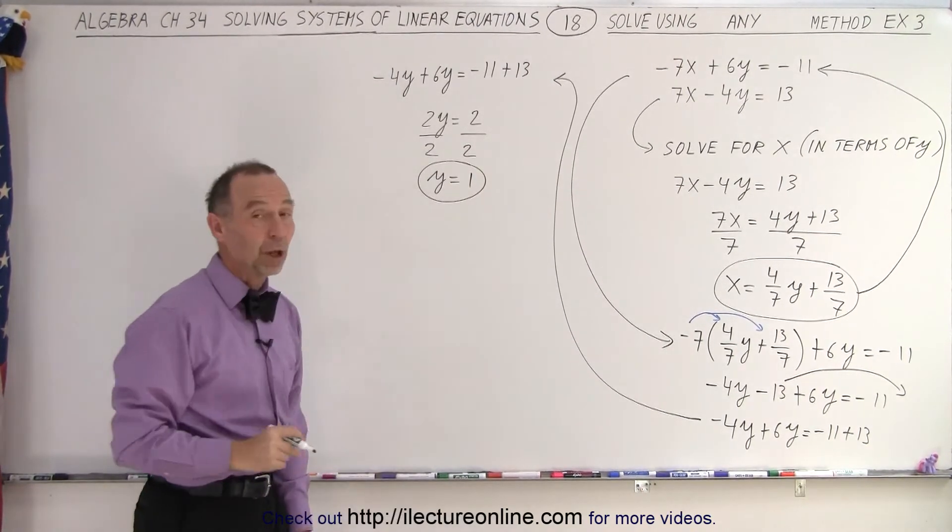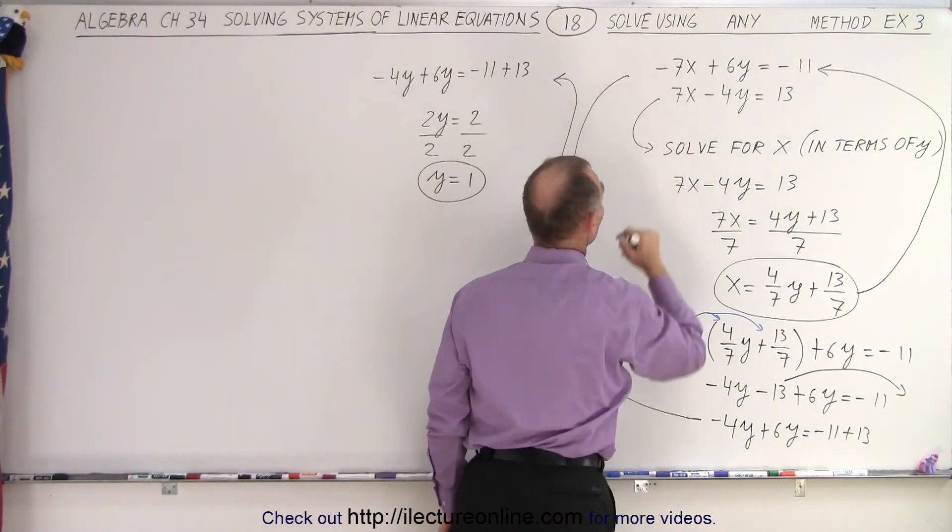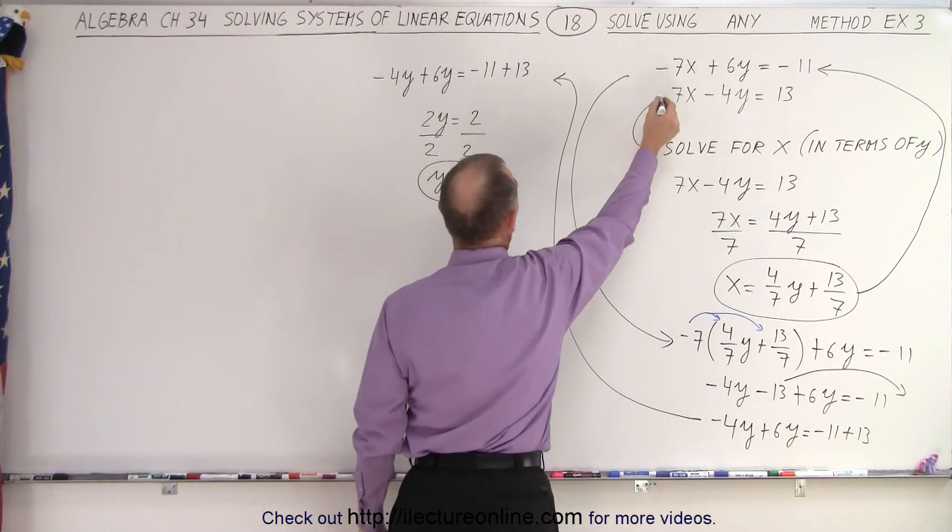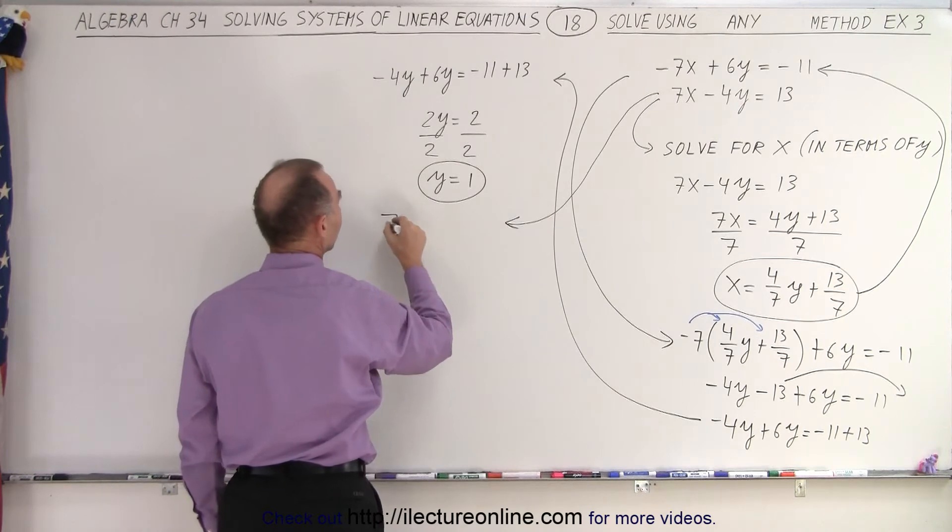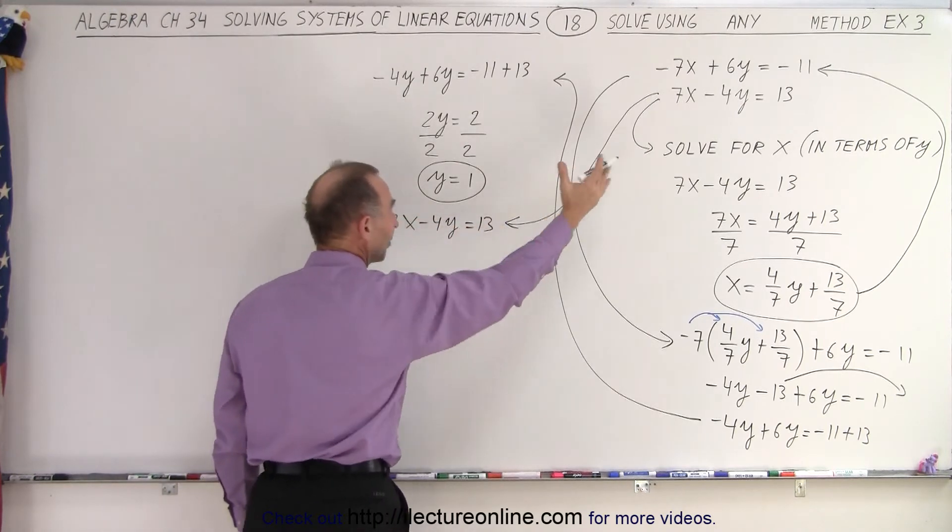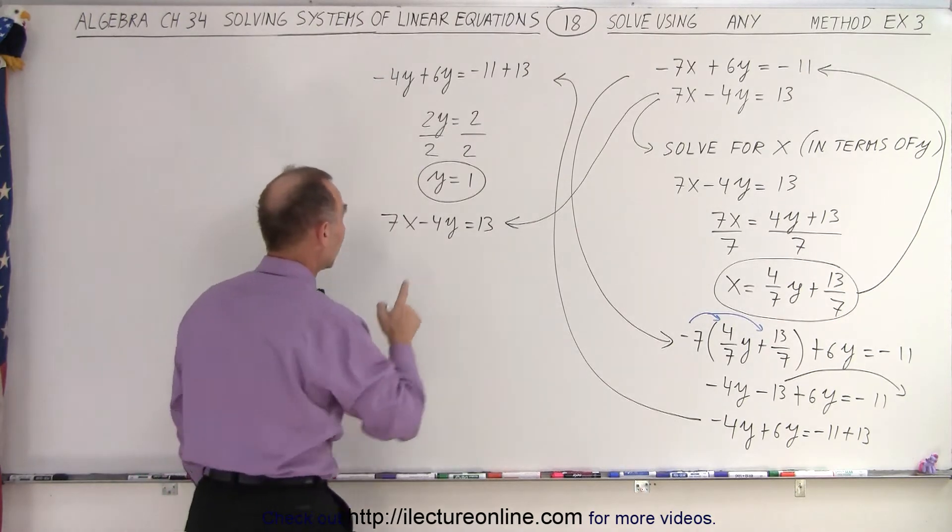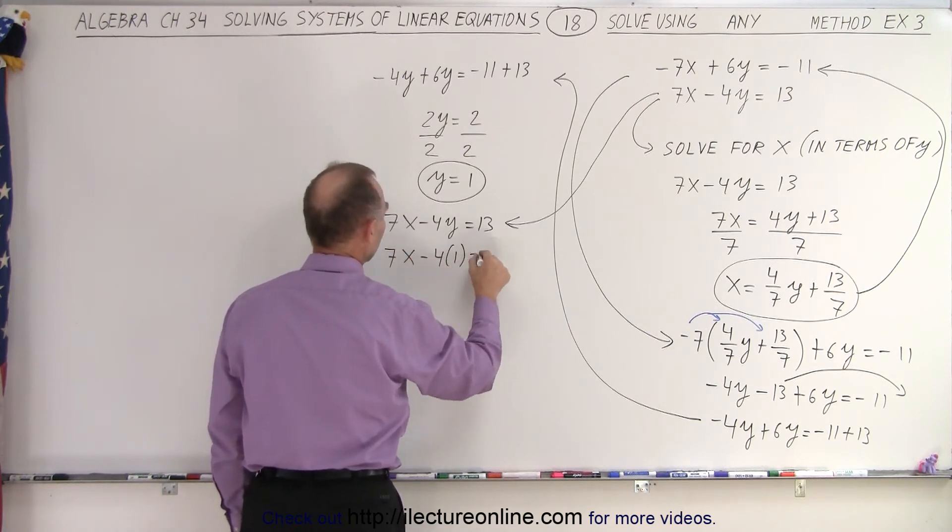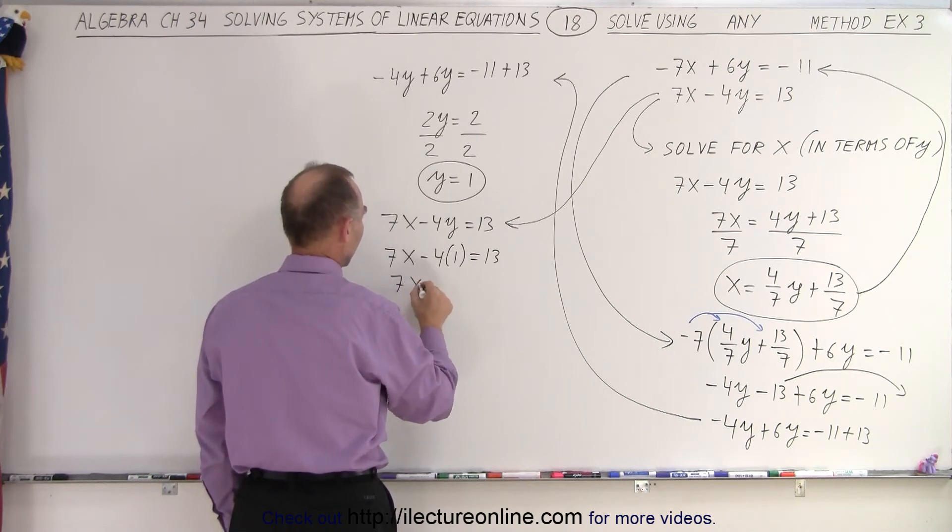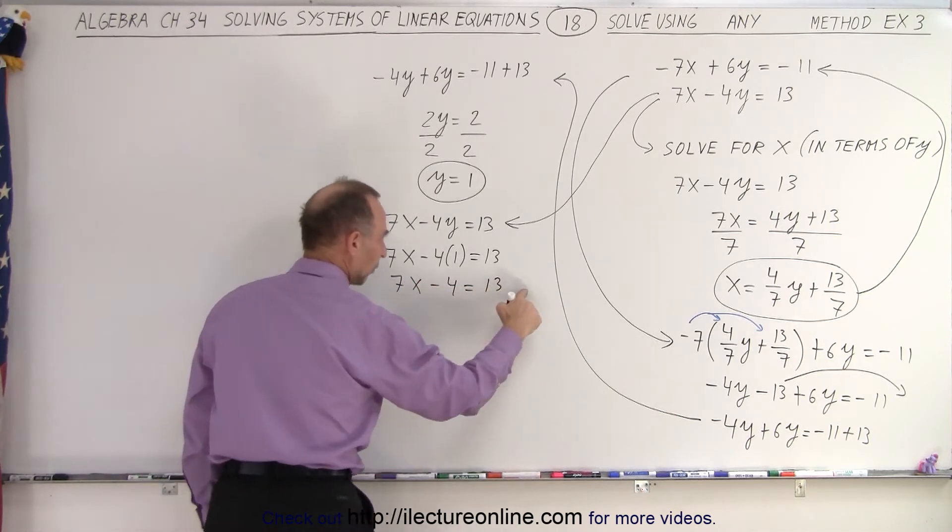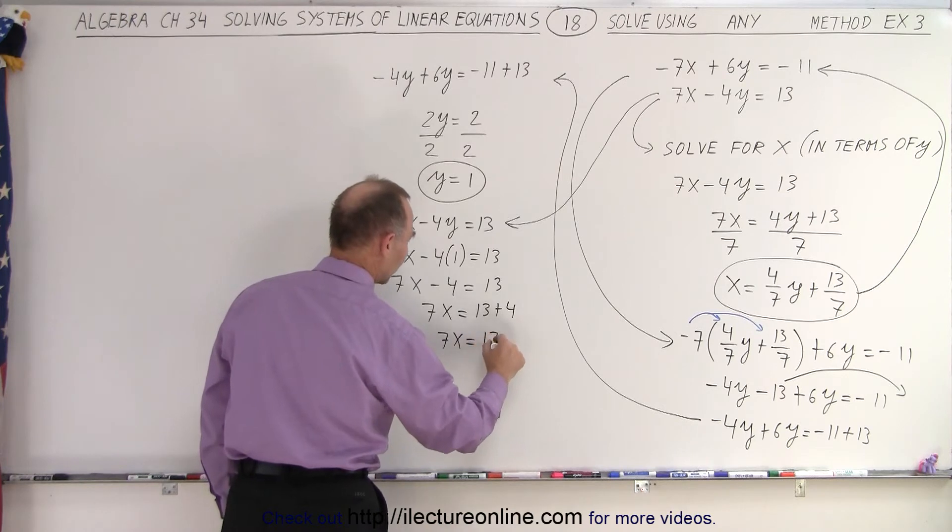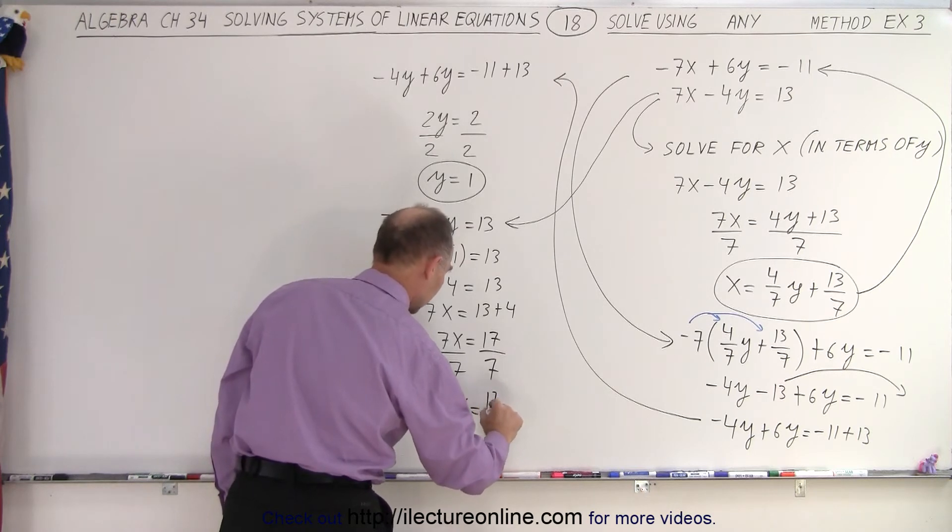So that gives us the first variable. All we have to do now is plug that into one of the two equations. Which one? It doesn't really matter. So let's take this equation right here. So we're going to take this and bring it down here. End up with 7x minus 4y equals 13. Notice I simply copy the equation again before I start working with it. I now plug in 1 for y. So 7x minus 4 times 1 equals 13. So that gives us 7x minus 4 equals 13. Now I'm going to bring the 4 across. Get 7x equals 13 plus 4, or 7x equals 17. Divide both sides by 7. And I get x equals 17 over 7.